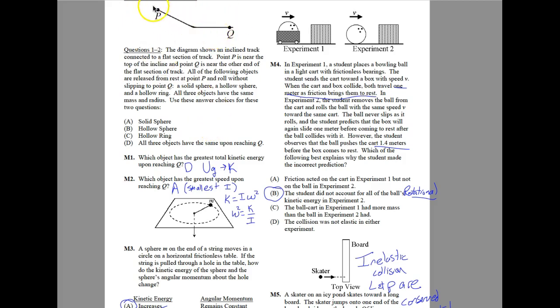You have a diagram here of a ramp, and then it goes to a straight horizontal track. We are releasing three objects: a solid sphere, a hollow sphere, and a hollow ring, each of which have a different I value, or moment of inertia. However, they don't ask you any calculation questions. Instead, they set each one here, and then it rolls down. They want to know what is the difference in the kinetic energy at the bottom for all three.